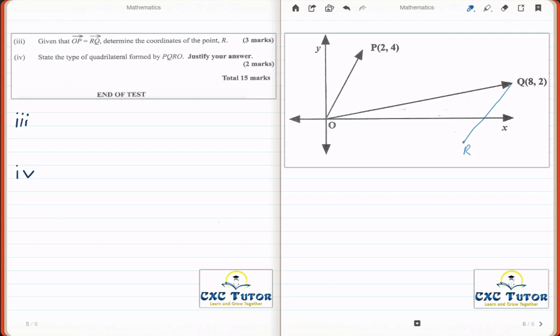Now, to solve for R, we have to figure out how to get from O to R. So, O to R is the same thing as OQ minus OP.